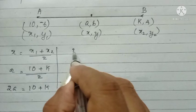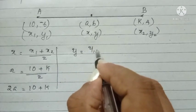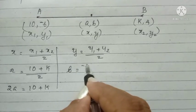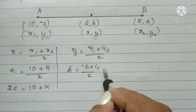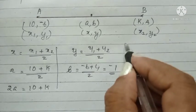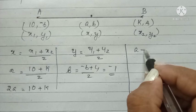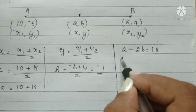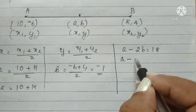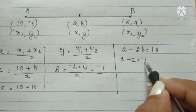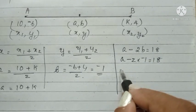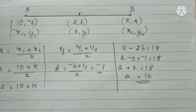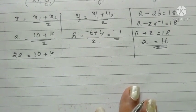Then, y coordinate equal to y1 plus y2 by 2. Therefore, b equal to minus 6 plus 4 by 2. It is equal to minus 1. But in the question, given a statement, a minus 2b equal to 18. Therefore, a minus 2 into b, we got as minus 1, equal to 18. That means a plus 2 equal to 18. a equal to 16. Now, we got a is equal to 16.